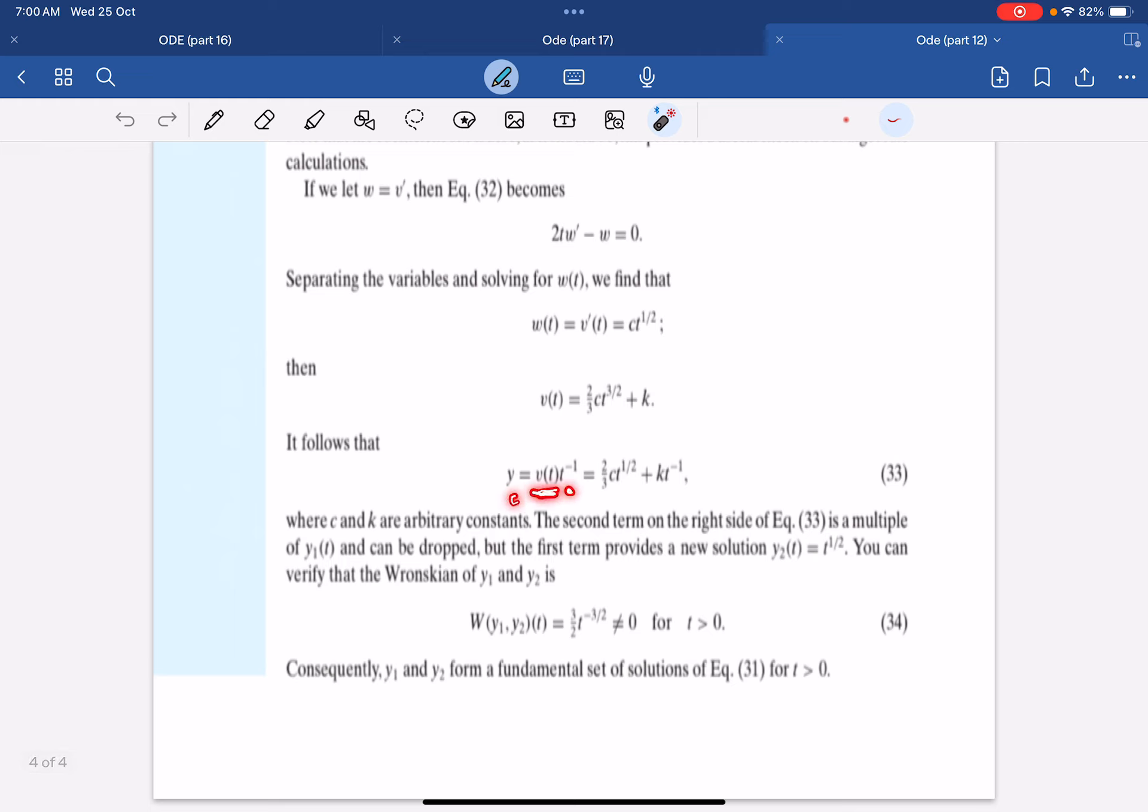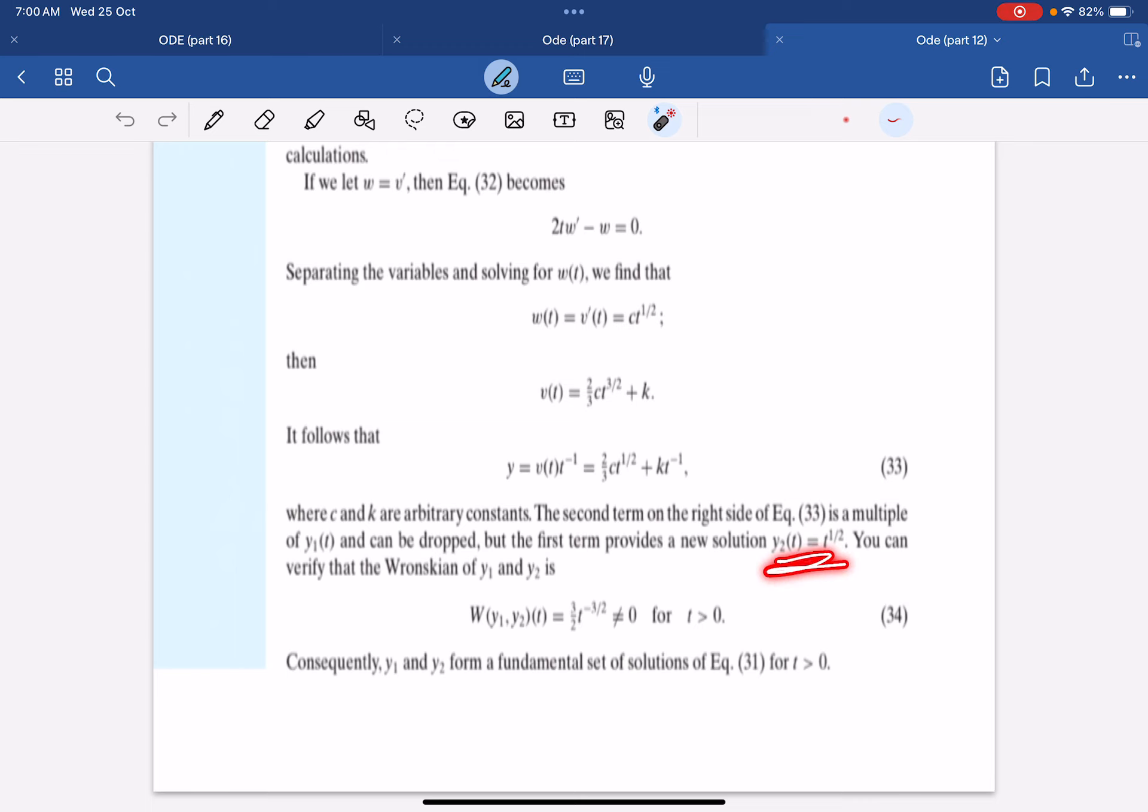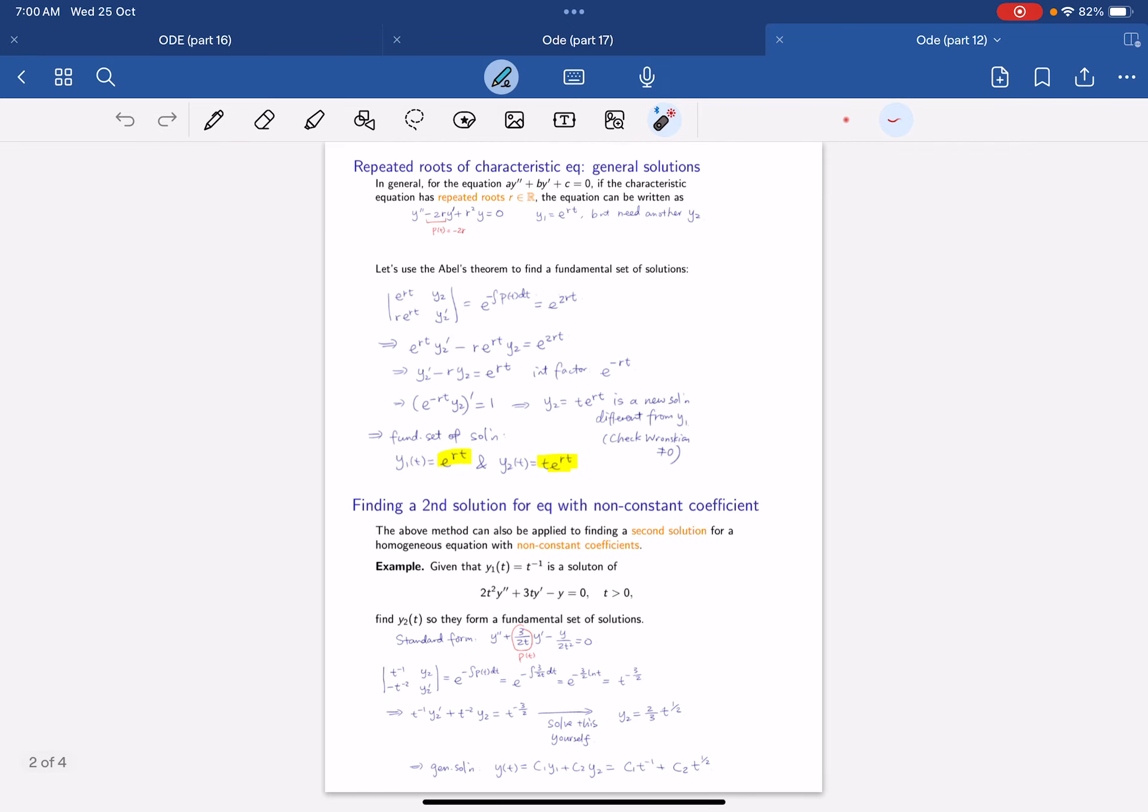It follows that y equals to v times (t-1) is this. This part you can ignore because it is a multiple of y1. We just see that y2 will just equal to t^(1/2). We just need to check the Wronskian to be non-zero, and we see that we arrive at the same formula as when we use Abel's theorem.